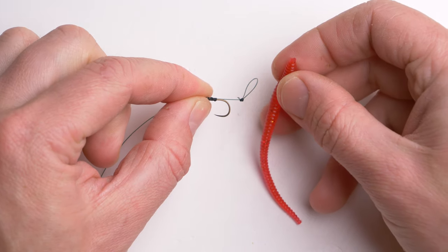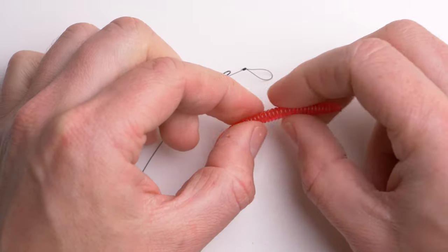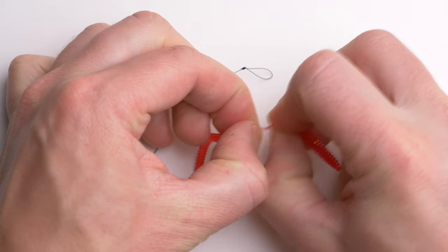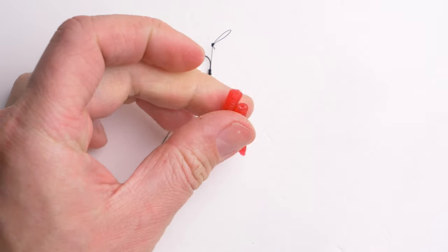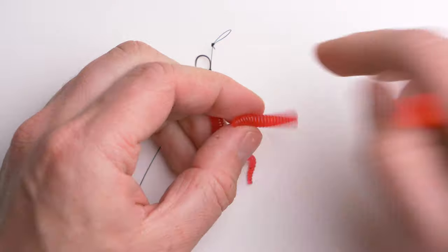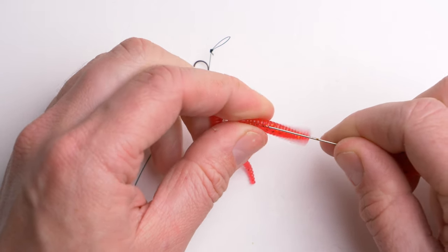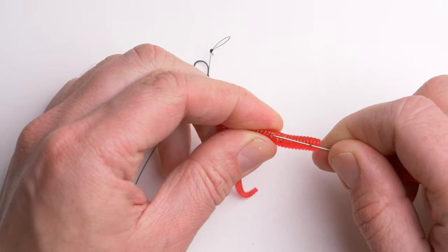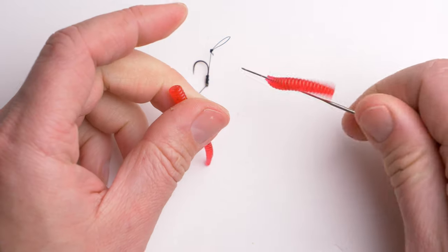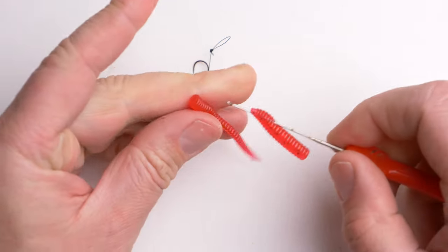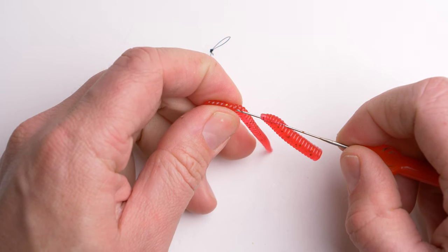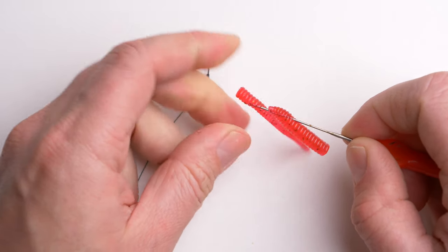A very popular way of hair rigging a worm is just by breaking the worm in half, more or less. Then grab a needle and thread the worm's head through the needle, and then do the same with the other half.